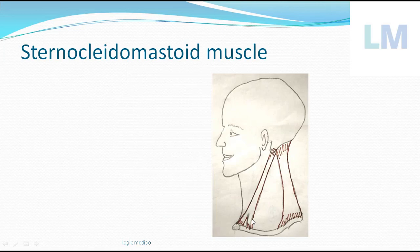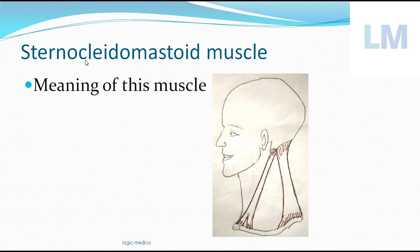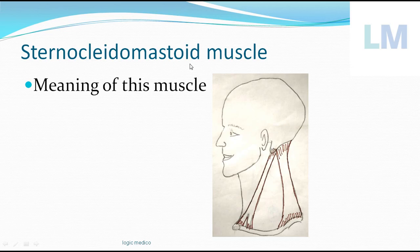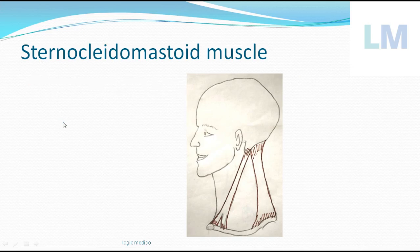What is the meaning of sternocleidomastoid? 'Sterno' refers to the sternum bone — the upper portion of the sternum or breast bone. 'Cleido' refers to the clavicle — it begins from the medial side of the clavicle, medial one-third to be specific. 'Mastoid' means breast-like — it is the mastoid process of the temporal bone. So this muscle begins from the sternum and clavicle at the lowermost part of the neck, going obliquely upwards and posteriorly towards the mastoid process of the temporal bone.